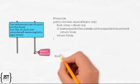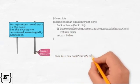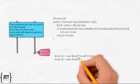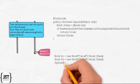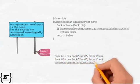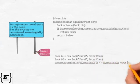Create two book objects with the same value for name and author. Now when b1 is compared to b2 using the equals method, it will return true.